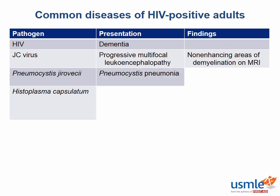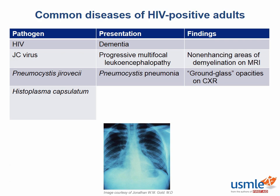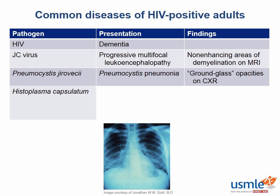Pneumocystis jirovecii can lead to Pneumocystis pneumonia. On chest x-ray, we see ground glass opacities in the bases. What we see is these nodular, ground glass, rough appearing lung that is infected by the Pneumocystis. We can give trimethoprim-sulfamethoxazole as prophylaxis against Pneumocystis infection when the CD4 count gets to less than 200.